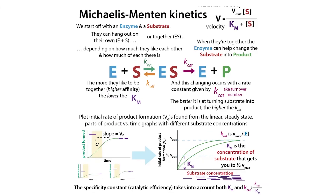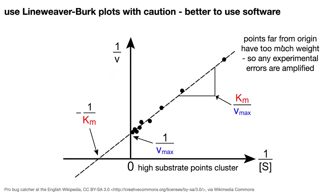We vary the substrate concentration and get initial velocities from the steady state zone, then plot those initial velocities against substrate concentration to find our kinetic constants. The Km is going to be the concentration that gets us to the half-Vmax, and the Kcat is that Vmax divided by our enzyme concentration. It might seem simple to just look at where it plateaus and take the halfway mark, but it's actually harder than that to figure out exactly where it plateaus, so typically we use a nonlinear regression to fit a curve following the Michaelis-Menten equation. You can do this with software like GraphPad Prism as well as some free alternatives.